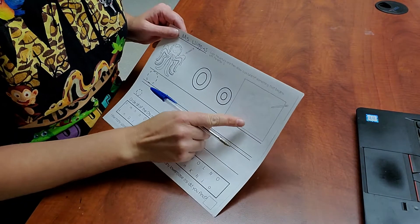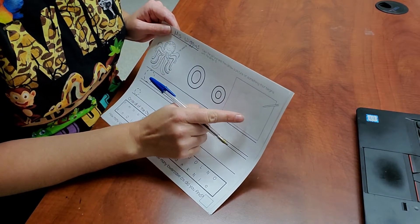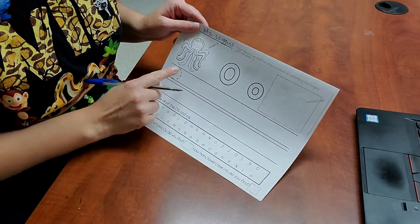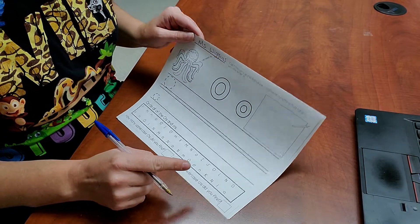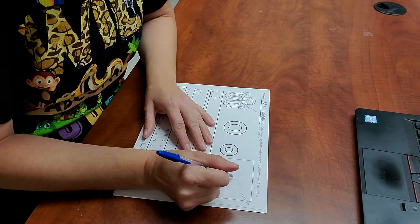And in this box, we need to draw something that starts with O. And we have an octopus here, so you can draw an octopus if you want. But I think I'll draw an ostrich.